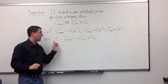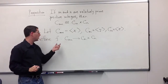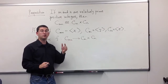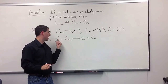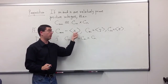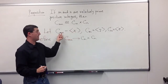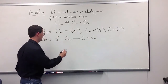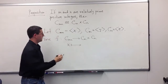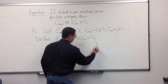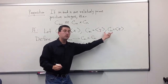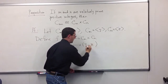We now want to define a map f from C_mn to C_m cross C_n. Since we're trying to get f to be a homomorphism, we only have to define it on a generator for the cyclic group of order mn, and then show that the image of f on that generator satisfies the same relations as the generator — namely that x to the mn is the identity element. So I only have to define it on the generator x, and I'm going to send it to the pair (y, z).